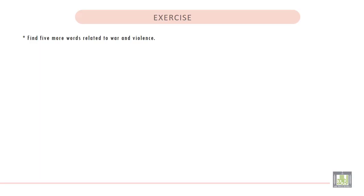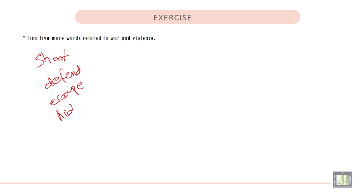Exercise: Find five more words related to war and violence. Here we have words like: 1. Shoot. 2. Defend. 3. Escape. 4. Hide. And the last one could be: 5. Attack.